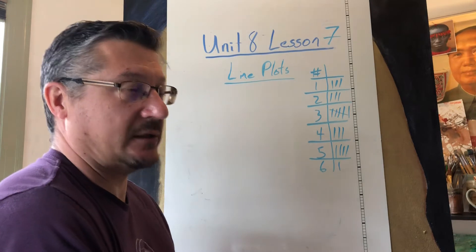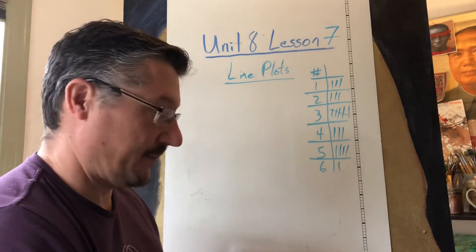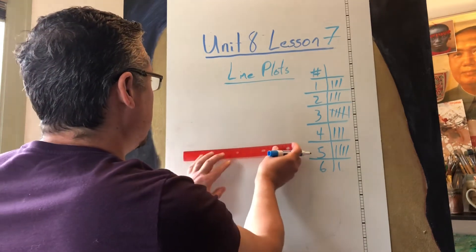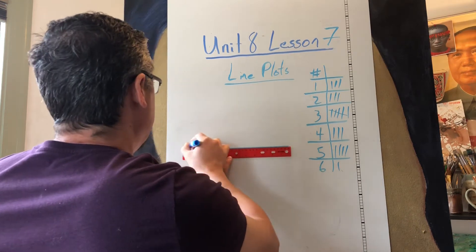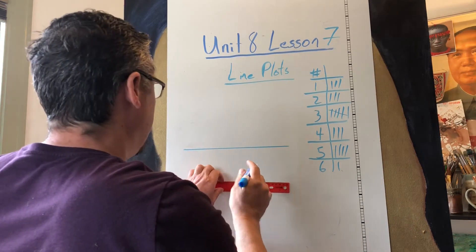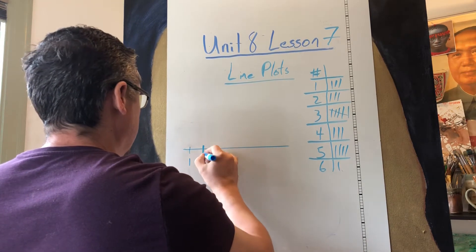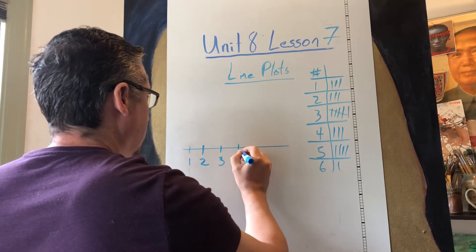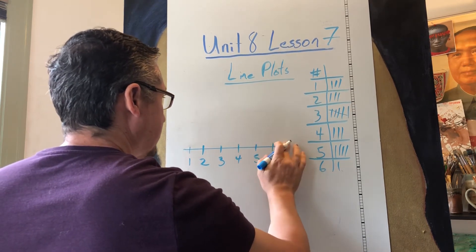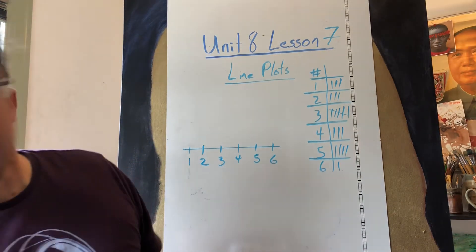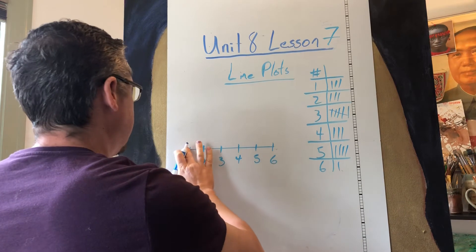I just want to make a chart to keep track of my data — my information. What is data? It's information, right? So I'm going to make a line and label it one, two, three, four, five, and six. That's my chart — that's all the information. I only have a six-sided die, so that's all I roll.